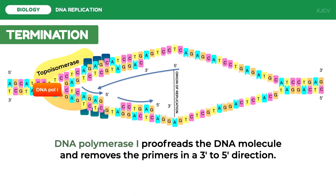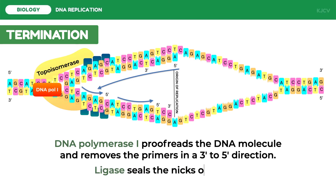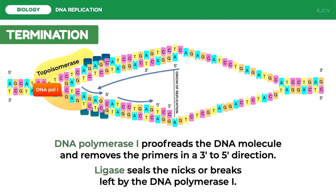The primers are replaced by DNA nucleotide bases in the 3 prime to 5 prime direction. This action of DNA polymerase I creates nicks or breaks that make the DNA look segmented. After making sure there are no errors in the replication process, ligase seals the nicks or breaks left by DNA polymerase I.